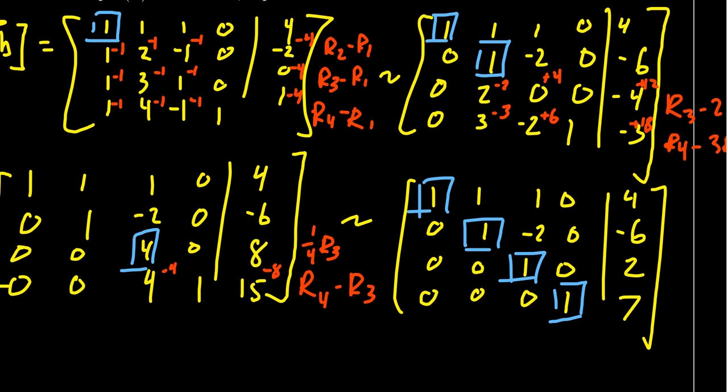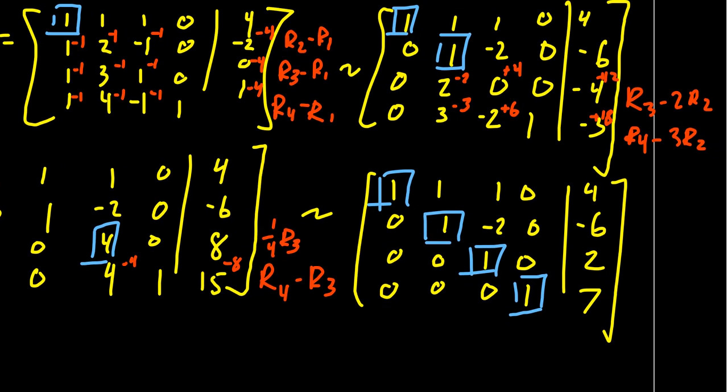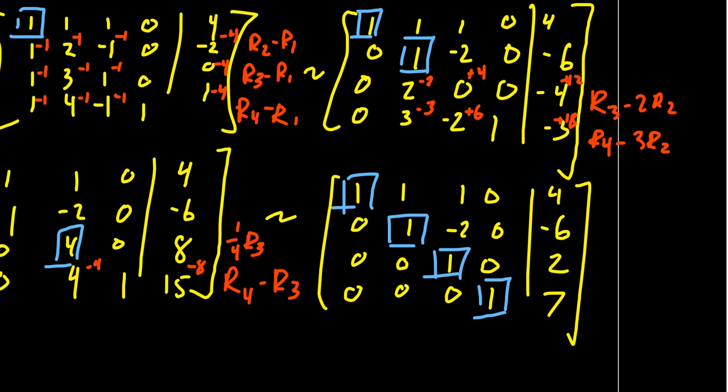And because the system is consistent, there is a solution. This tells us that, in fact, B is a linear combination of the A's. Now, in the case that B is a linear combination, we have to continue to find that linear combination. If this system turned out to be inconsistent, we could report no, B is not inside the span. But we have to keep going now.